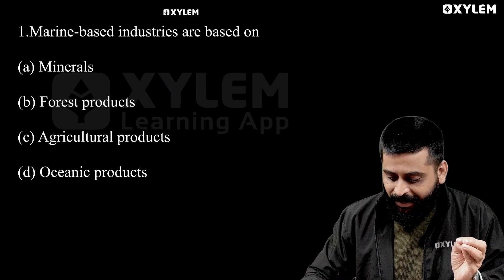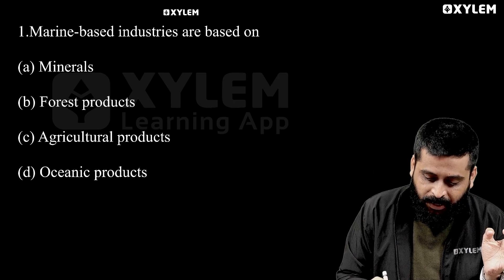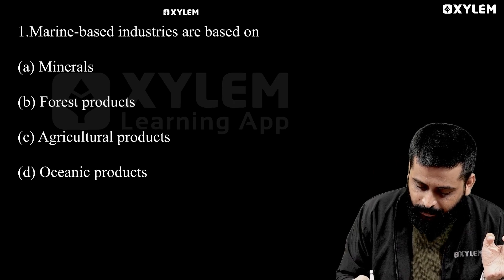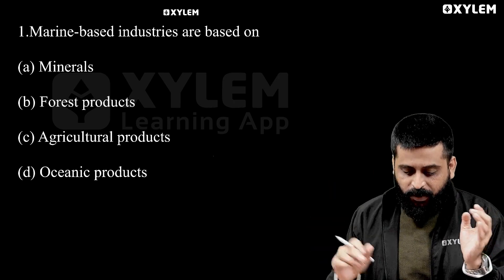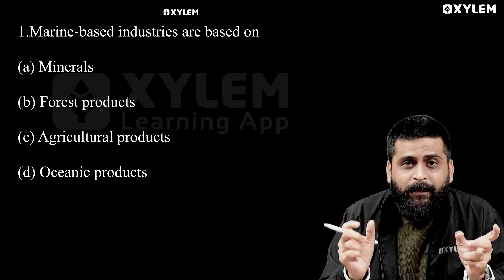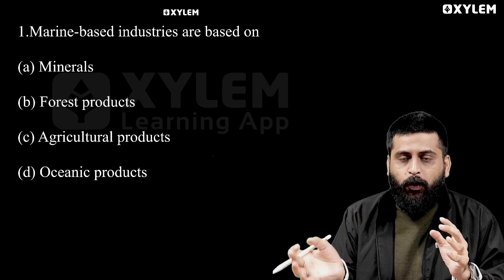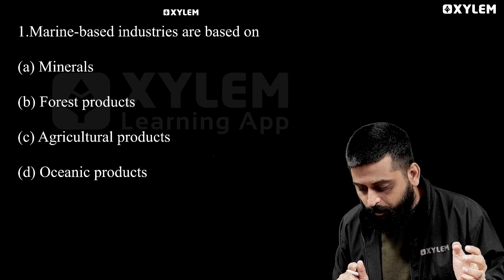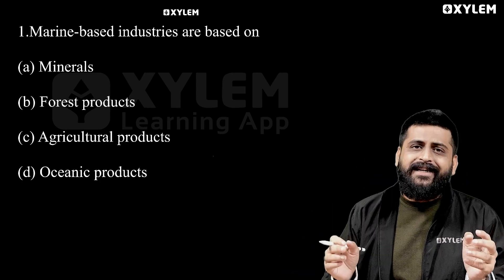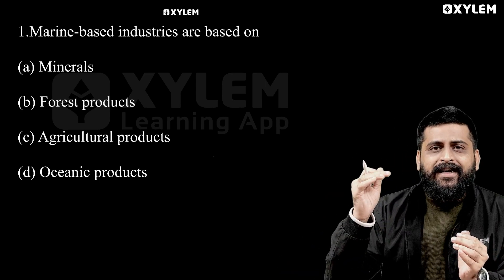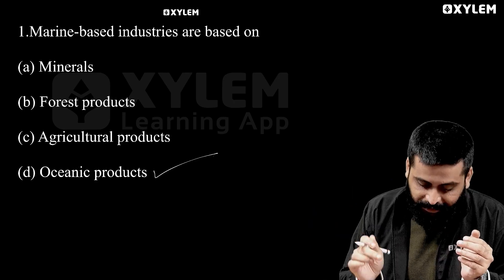Why do we talk about the concept? In this country, you can't talk about things like minerals, forest products, agriculture products, oceanic products — this is how we can't talk about things. Option D is the right answer: ocean products.